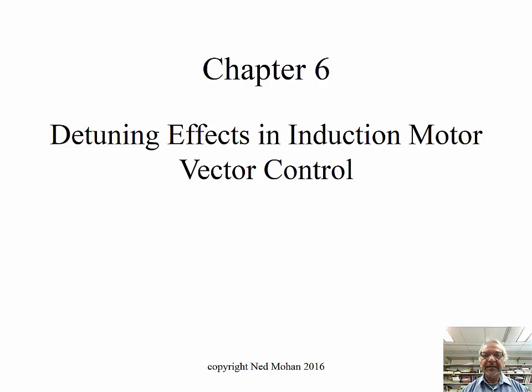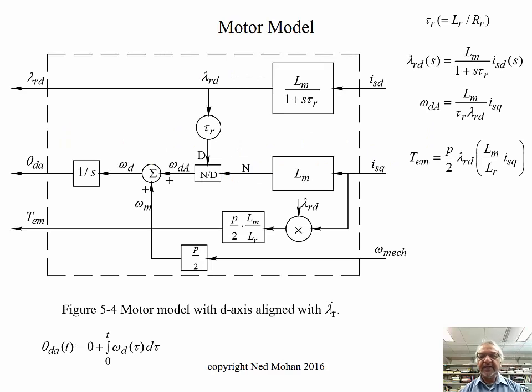So in this chapter, we will see what happens if our estimate of motor parameters are not absolutely correct. That was a question I had when I started to learn about this material, and that's what I'd like to clarify in this chapter. Borrowing this slide from chapter 5, we saw how we estimate, for example, the position of the rotor flux linkage with which we would like to align d-axis in order to do vector control.